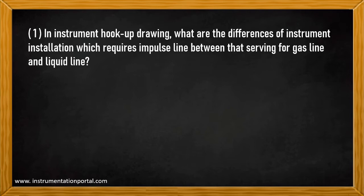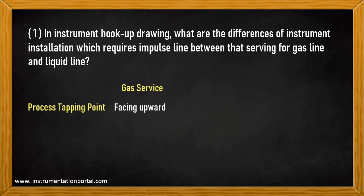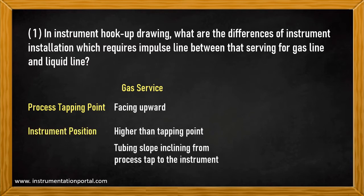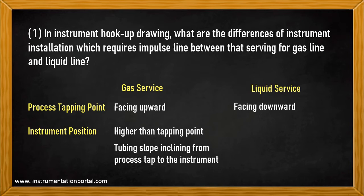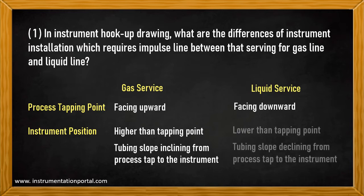Question number one: in an instrument hookup diagram, what are the differences in instrument installation requiring impulse lines between gas service and liquid service? In gas service, the process tap shall face upward, the instrument is mounted higher than the process tap, and tubing shall slope inclining from the process tap to the instrument to allow self-drain of any liquid component back to the main piping. In liquid service, the process tap shall face downward, the instrument is mounted lower than the process tap, and tubing shall slope declining from the process tap to the instrument so that any gas component in the liquid can go back to the main piping.